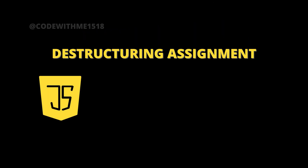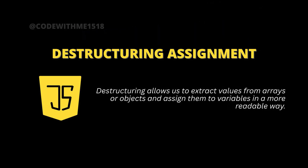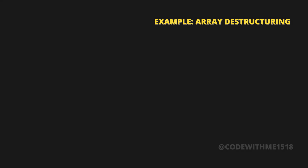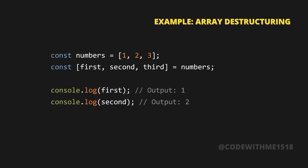Destructuring assignment allows us to extract values from arrays or objects and assign them to variables in a more readable way. For example, array destructuring: const numbers = [1, 2, 3]; const [first, second, third] = numbers; console.log(first); — Output: 1. console.log(second); — Output: 2.